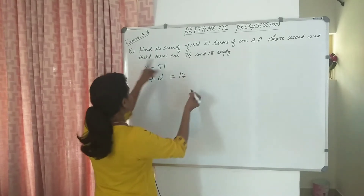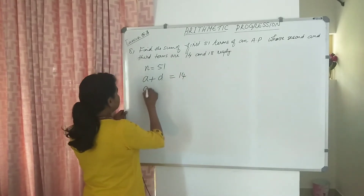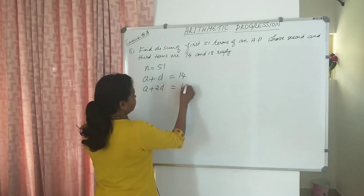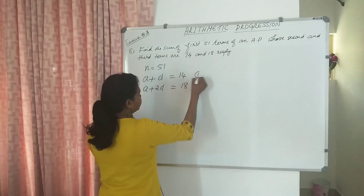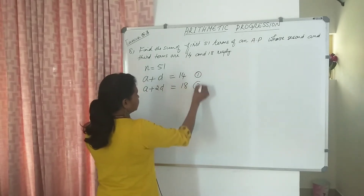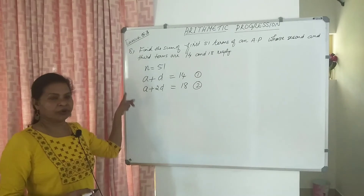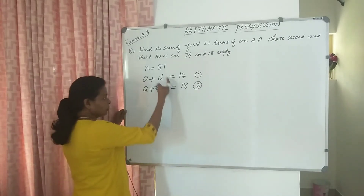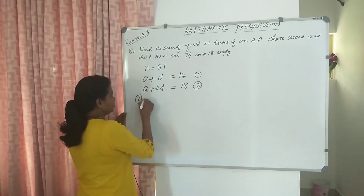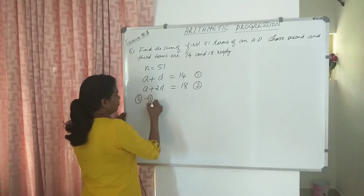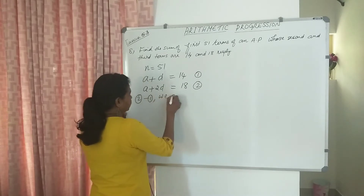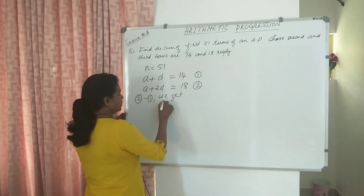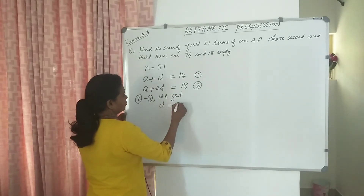And the third term: we can write A plus 2D equal to 18. Equation number 1 and 2. This equation is solving; we get A and D. If you subtract equation 2 minus equation 1, we get A cancel, 2D minus D. D is equal to 4.